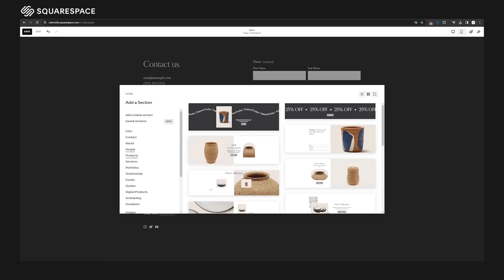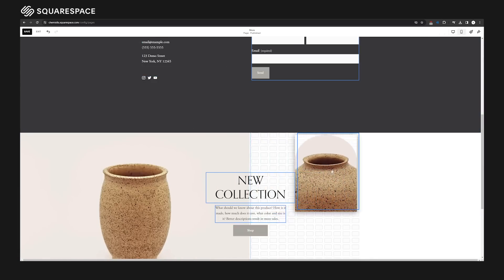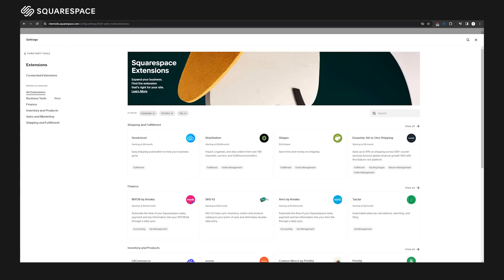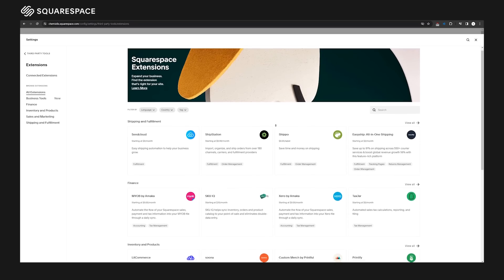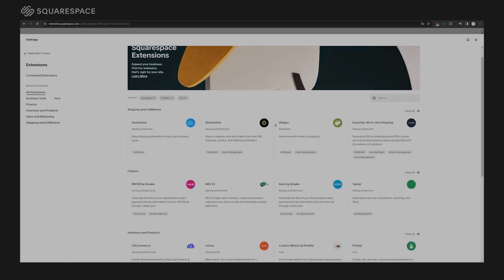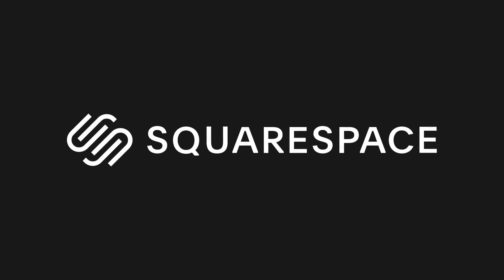Besides that, their Fluid Engine design system allows you to be extra creative in building what you need, as well as extensions that allow you to use many third-party tools to extend the functionality of your website. So go to squarespace.com to try it out for free. And when you're ready to launch, go to squarespace.com/cameolus to save 10% off your first purchase of a website or domain.